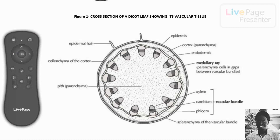This vascular cambium is very important in secondary growth — it allows the stems of plants to grow thicker as opposed to taller, increasing in girth.